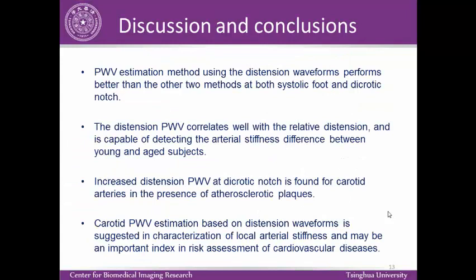Finally, we conclude the study as follows: the pulse wave velocity estimation method using distension waveforms performs better than the other two methods at both the systolic foot and dicrotic notch. Distension-based pulse wave velocity correlates well with age and is capable of detecting arterial stiffness differences between young and aged groups. Increased distension pulse wave velocity at the dicrotic notch is also found in arteries with plaques. Therefore, carotid pulse wave velocity estimation using distension waveforms is useful for characterization of local arterial stiffness and may be an important index in the assessment of cardiovascular disease.